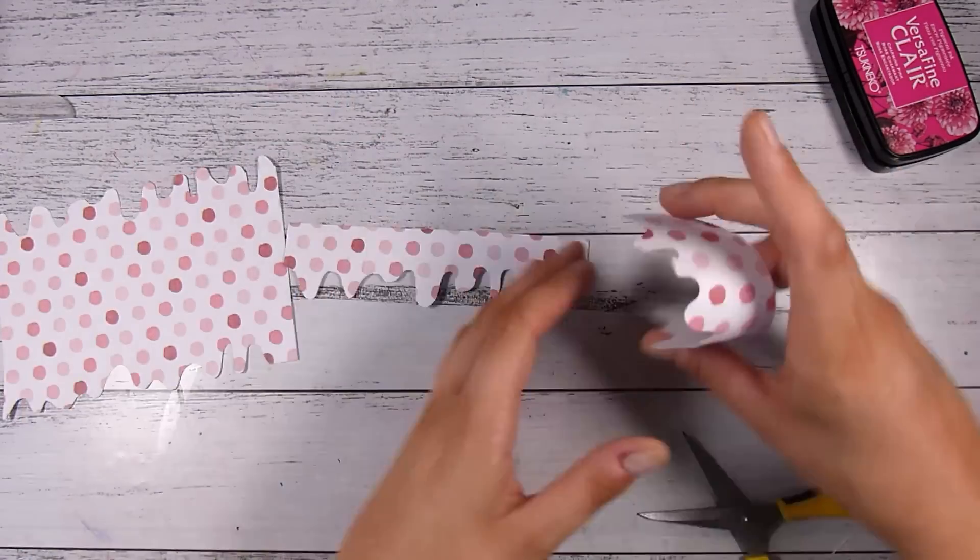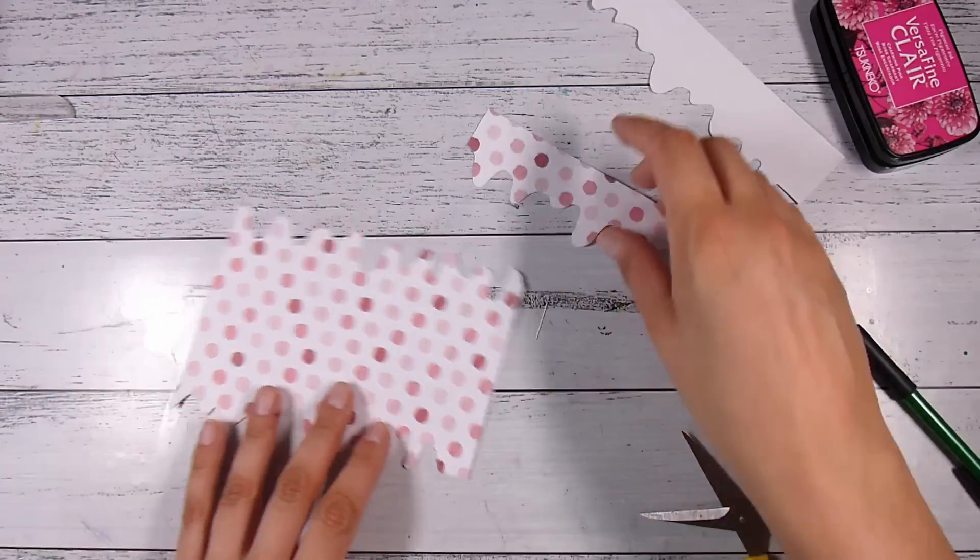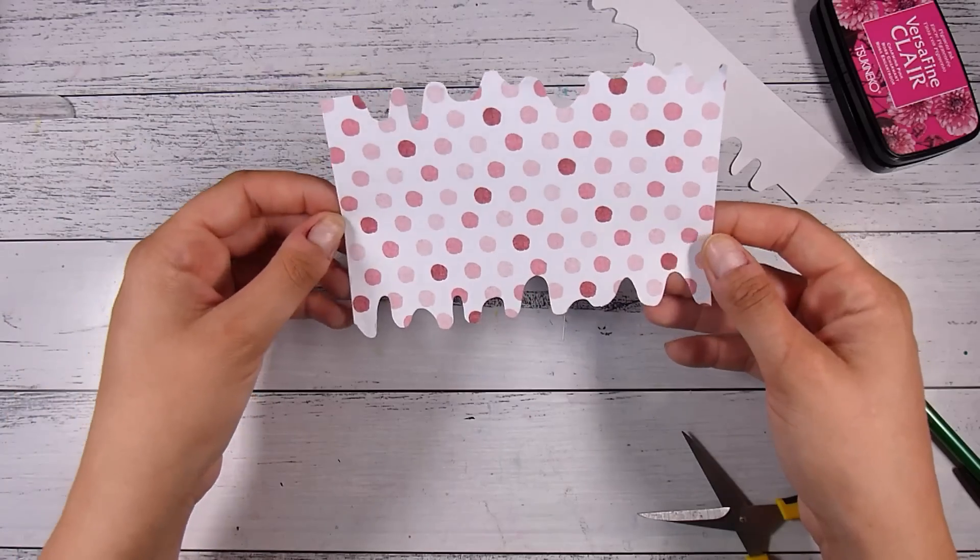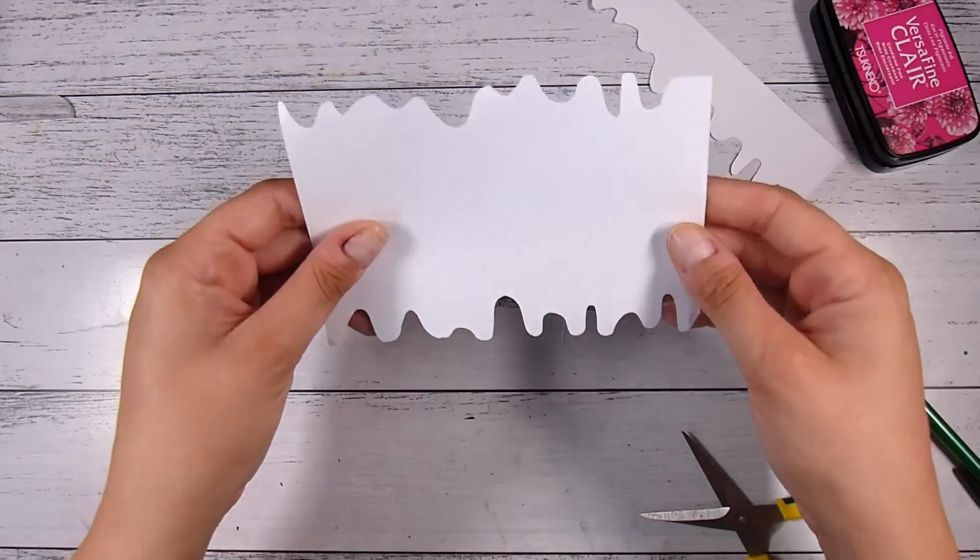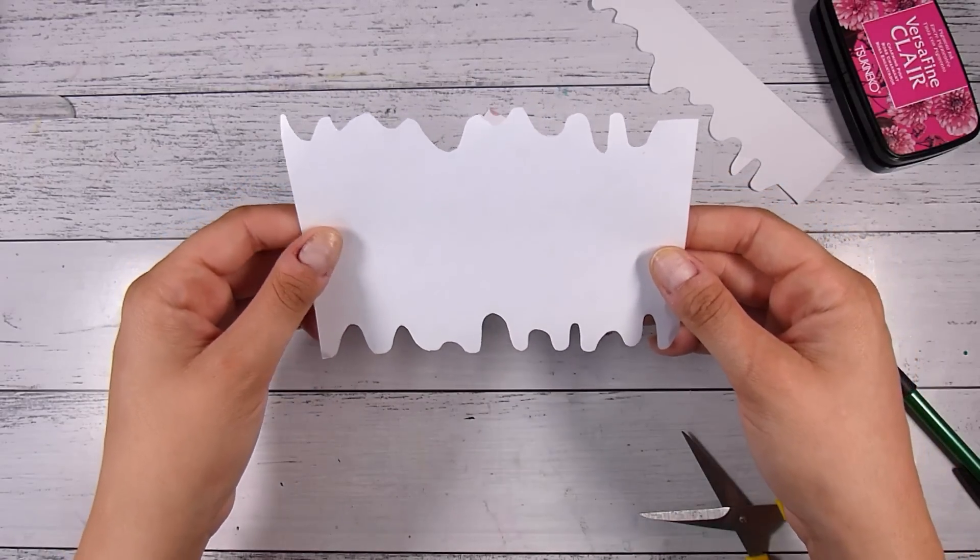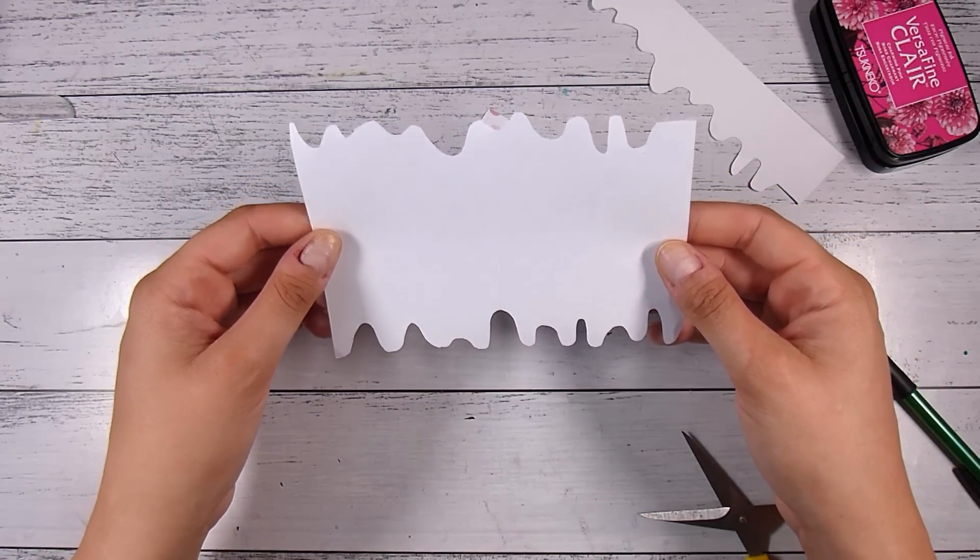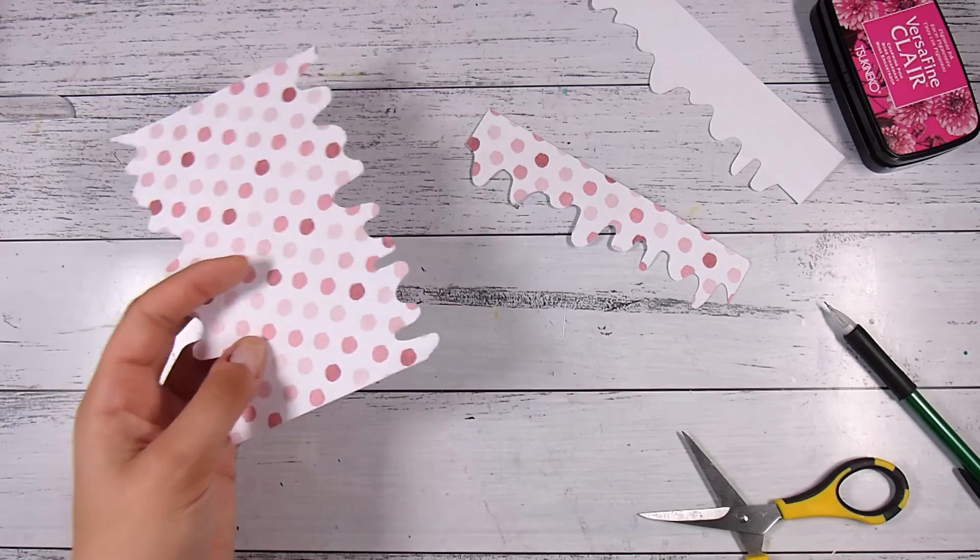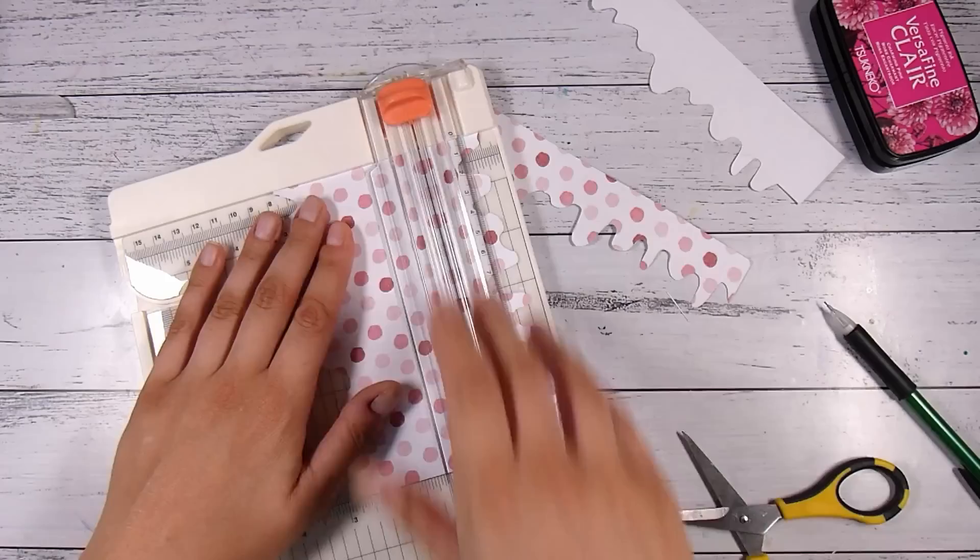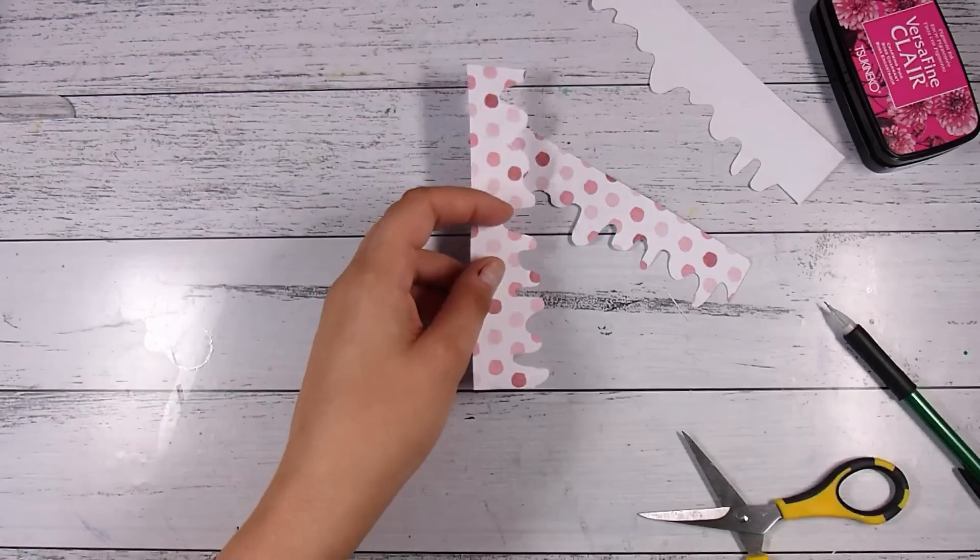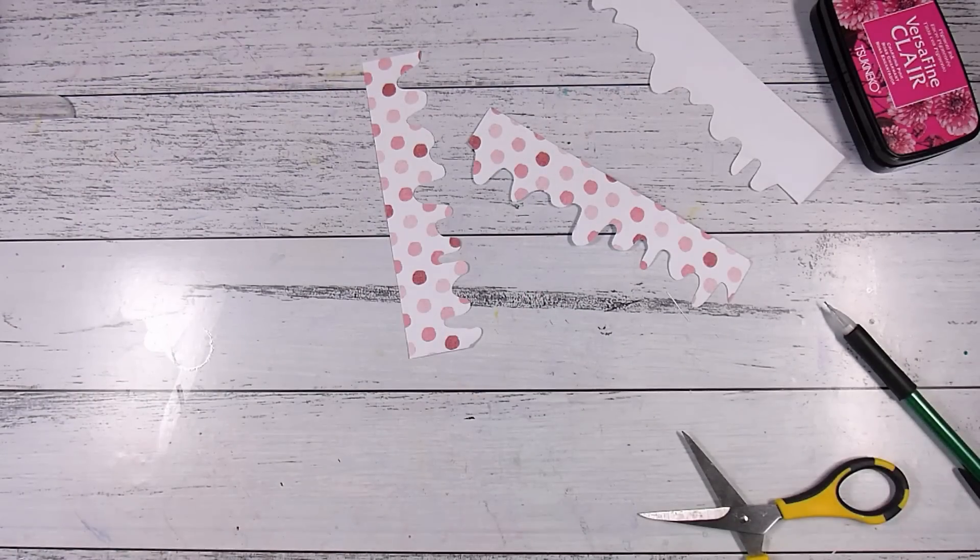You can see I kind of have that dripping pattern there ready to go. Very, very simple - you may have dies that do this as well and that is good too, but just whatever you have. I don't have the dies so scissors are good to go for me. Then what you can do once you have created one side is you can cut off the remaining part of the drips, and that can also become drips for your second layer of cake.